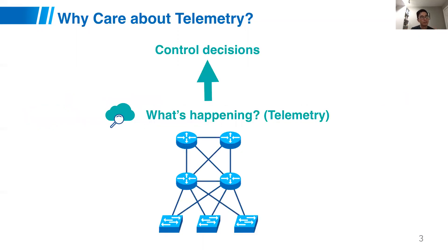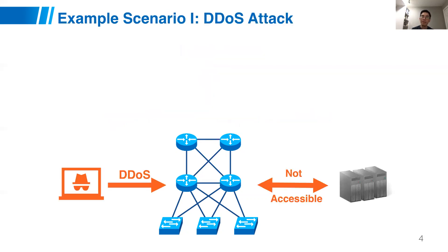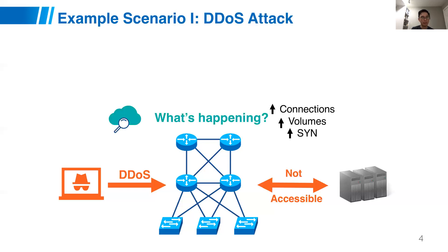Now you understand what telemetry is. So why do we need to care about it? Because when we manage the network, we need to understand first of all what's going on in the network. Then we need to use this information to enable timely and accurate control decisions. For example, if there is an attacker launching a distributed denial-of-service attack on your network, we really need to understand what's happening by identifying all these attacks and then use this information to enable attack mitigation.